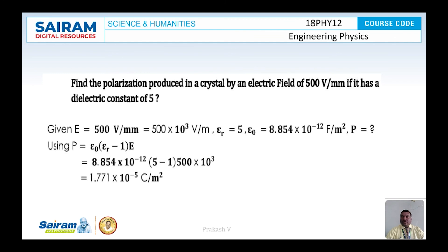Another problem: find the polarization produced in a crystal by an electric field of 500 volt per millimeter, if it has a dielectric constant of 5. Here, E = 500 V/mm = 500×10³ V/m, εᵣ = 5, and ε₀ = 8.854×10⁻¹² farad per meter square. Using P = ε₀(εᵣ − 1)E and substituting all parameters, the value of P = 1.771×10⁻⁵ coulomb per meter square.